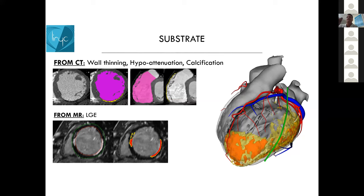CT gives us thinner cuts, so we have more spatial resolution with CT compared to MR, where you get more of a staircasing artifact as you begin to stack thicker cuts of myocardium. From CT, you get wall thinning, hypotenuation, and calcification that can be indicative of a rhythmogenic substrate. From MRI, you get late gadolinium enhancement with orange and yellow areas indicating dense and less dense scar.